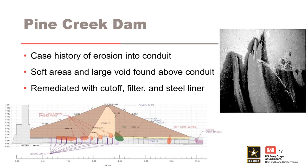Pine Creek Dam is a case history of erosion into the conduit. Soft areas with low blow counts and a large void were found above the conduit. The figure shows the location of the soft zones in red and the large void in green. The photo on the right shows leakage into the conduit. The project was remediated with a cutoff wall above the conduit, a drilled-in chimney filter, a downstream conduit perimeter filter, and a new steel liner.